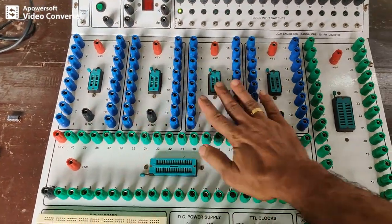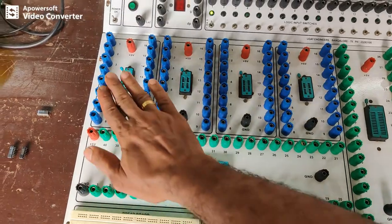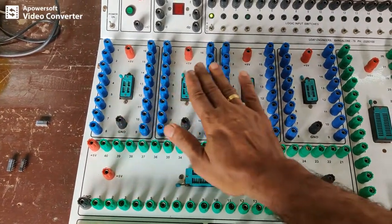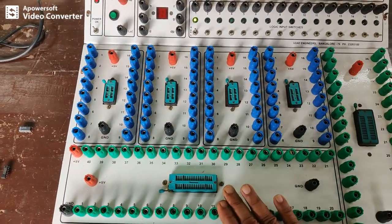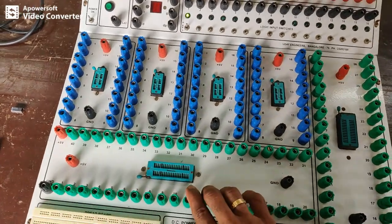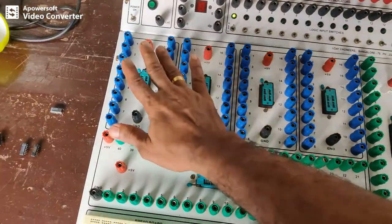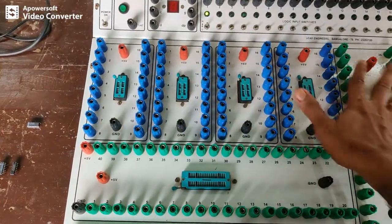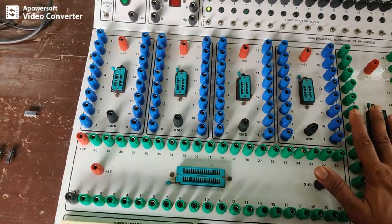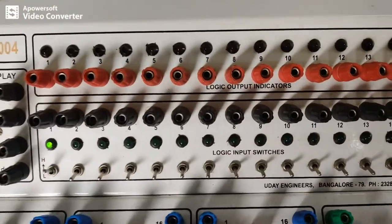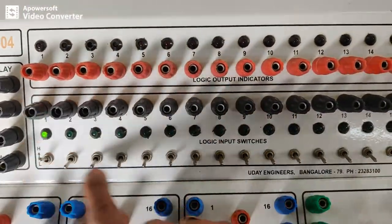These are called IC holders. We have total here 6 IC holders: 1, 2, 3, 4, 5, 6. Depending on the requirements of number of ICs in your circuit design, you can use this one. Either you can use 2 IC holders or you can use all the IC holders. Next one is this is called the input output section.